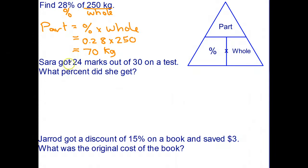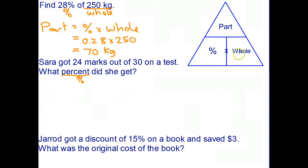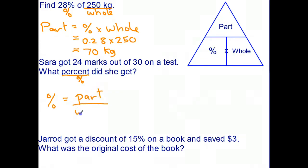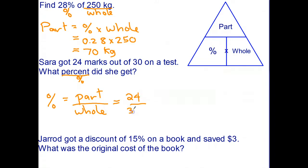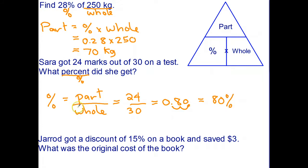Looking at the second problem: Sarah got 24 marks out of 30. The question is, what percent did she get? The 24 is the part, the 30 is the whole, and we're looking for the percent. The triangle tells us we find it by doing part divided by whole. So: percent equals part over whole — that's 24 out of 30. Converting that to a decimal gives 0.8, and converting to a percent by moving the decimal point two places gives 80 percent. So Sarah scored 80 percent on this test.